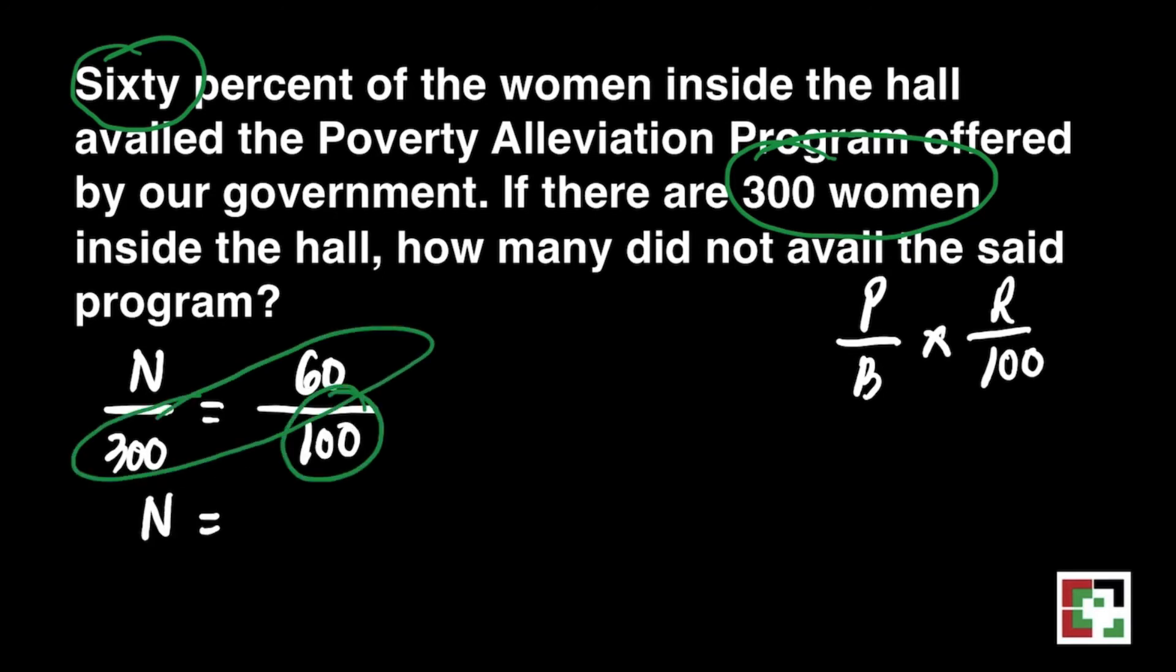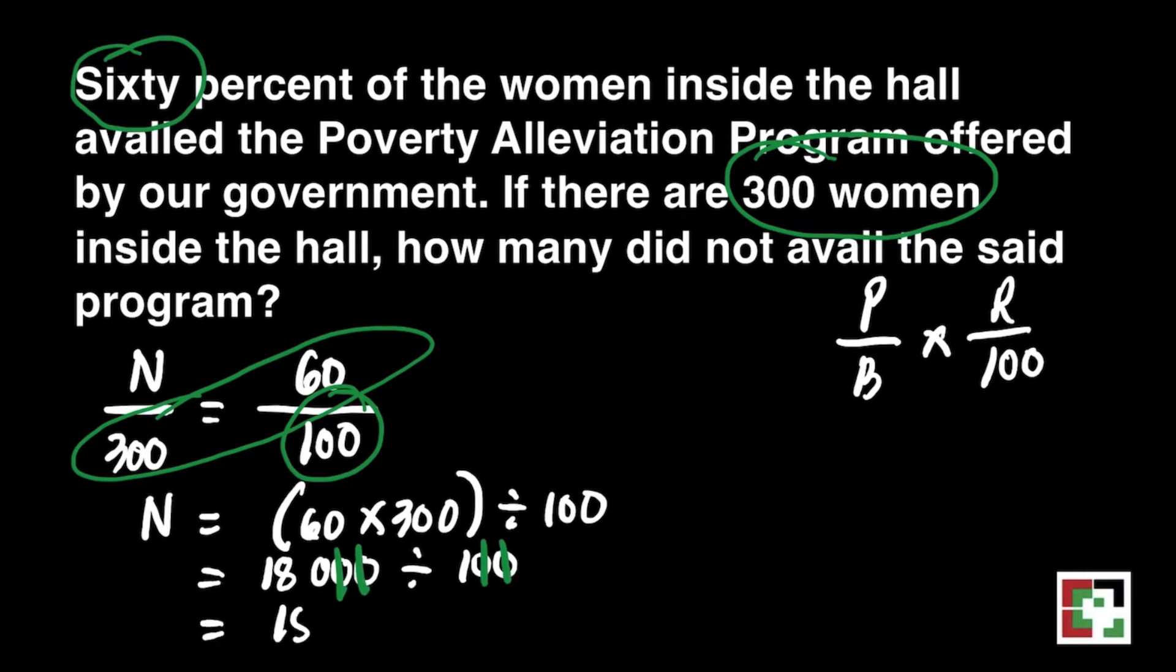How to get the value of n? Just do cross multiplication. That's 60 times 300 divided by 100. 6 times 3 is 18. Just add 3 zeros divided by 100. We can cancel the zeros there. That's 180 divided by 1 is equal to 180.